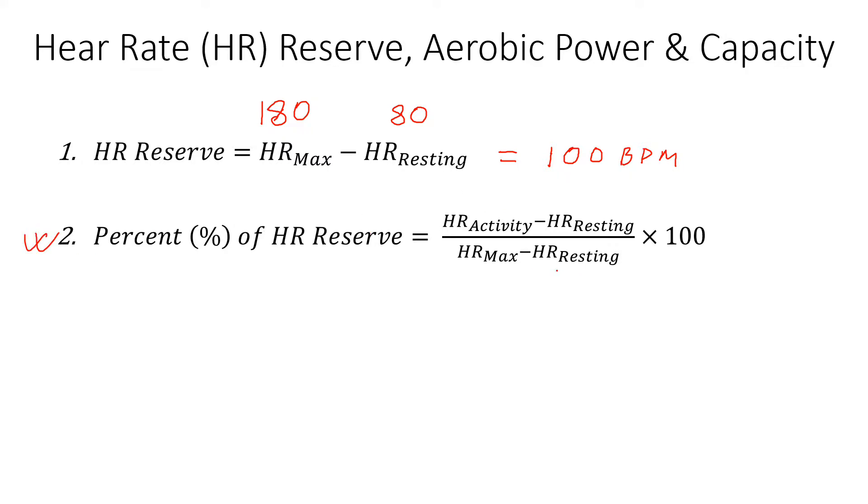We have already calculated the heart rate reserve for this person, which is 180 minus 80, which is 100. And then assume that the person is working at a rate of 140 beats per minute. Then the resting, so that's subtracted to 60. It's 100, 100 cancel, so the...